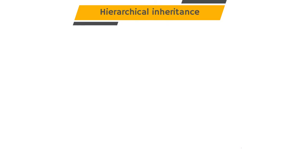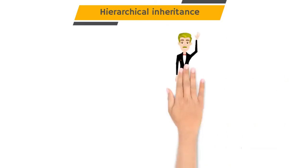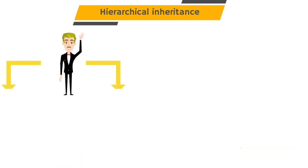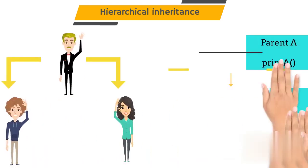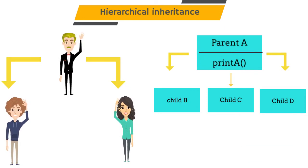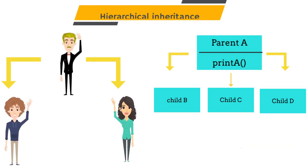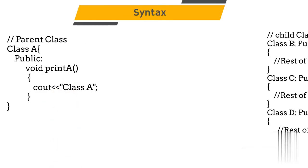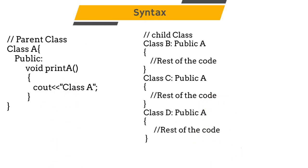The next type of inheritance is hierarchical inheritance. In this type, one parent class can have multiple child classes. Every child class can access the property of the parent class. You can see in the diagram that class B, C, and D are child classes of class A. All the child classes can access the properties of parent class A. You can see the syntax on your screen. In this example, we are inheriting three child classes from one parent class, which is A.